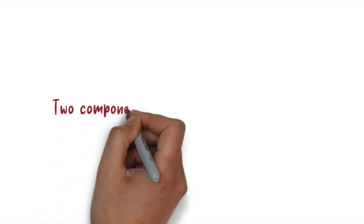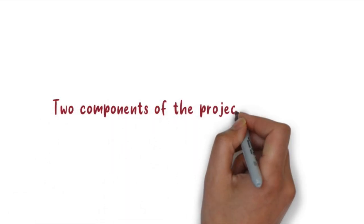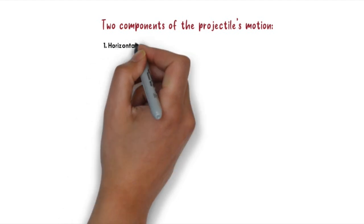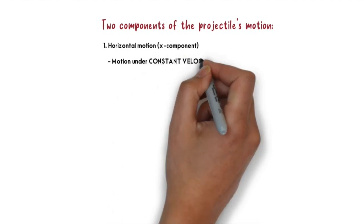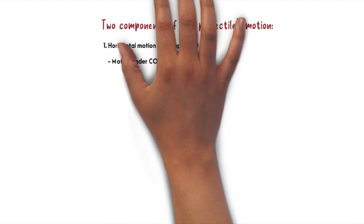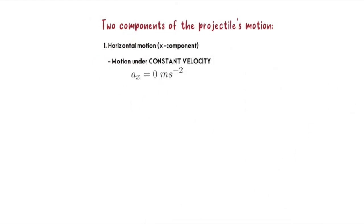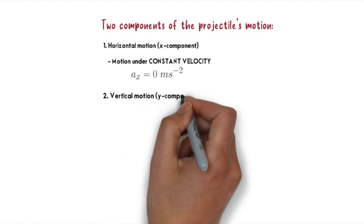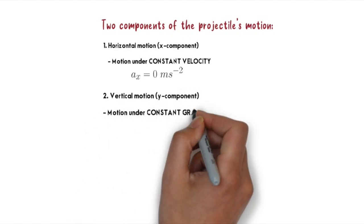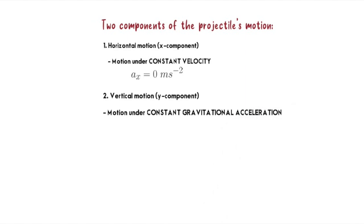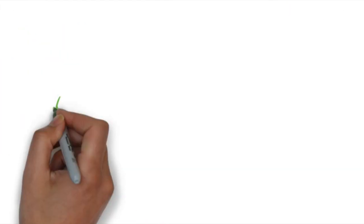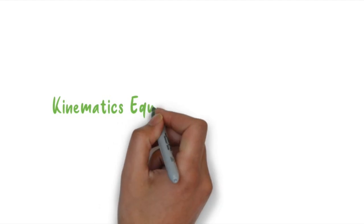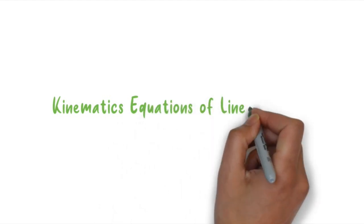Now let's look in detail at the two components of projectile motion — horizontal and vertical — which refer to the x and y components. The horizontal motion is under constant velocity, so acceleration equals zero. The vertical motion is the y component, under constant gravitational acceleration where a_y equals negative 9.81 meters per second squared.